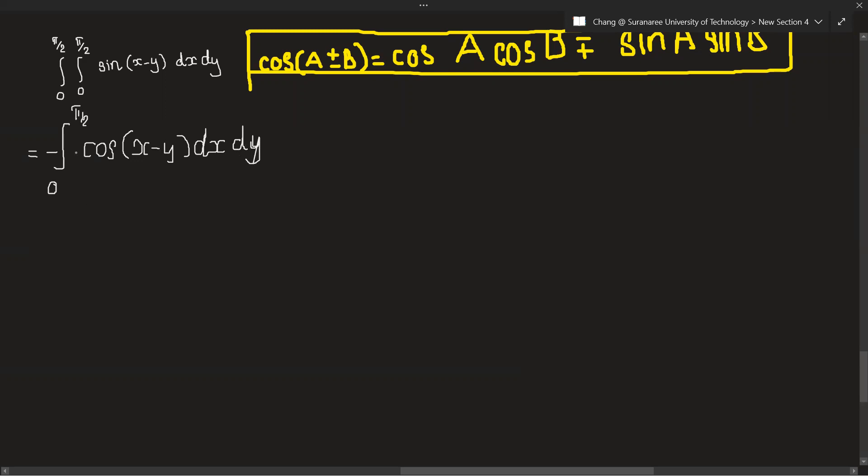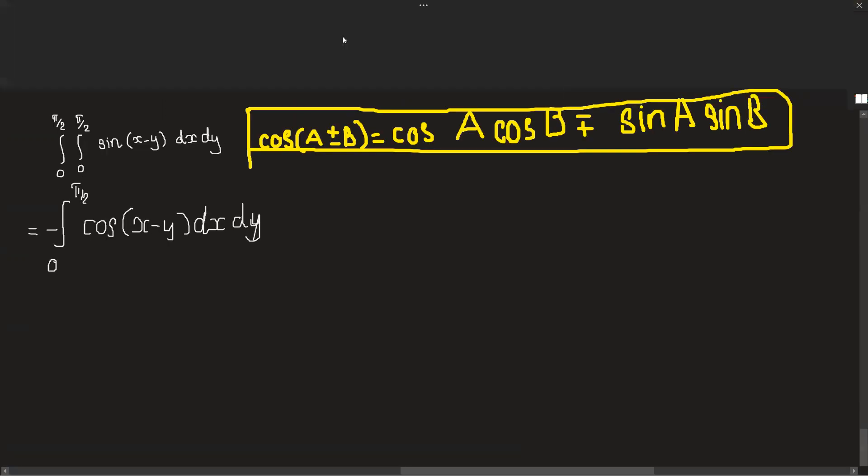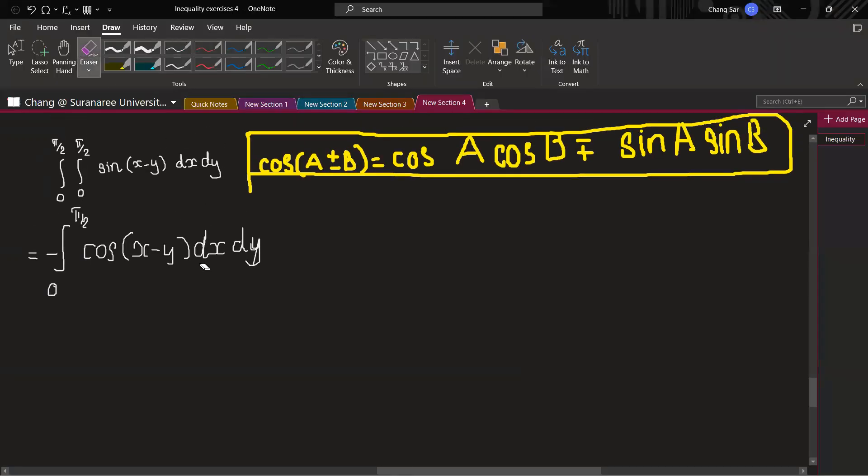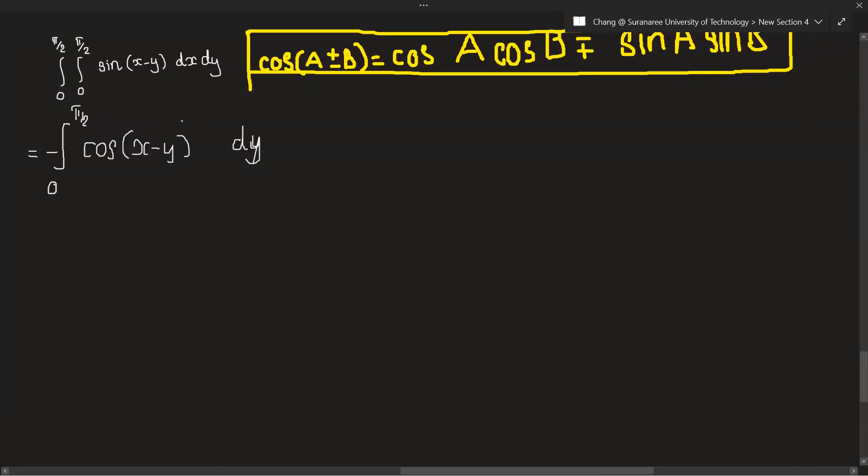Okay, and sorry we don't need to put dx again. We have to put the interval here, so 0 to pi over 2.